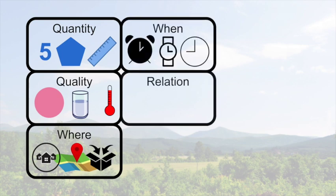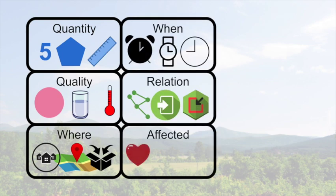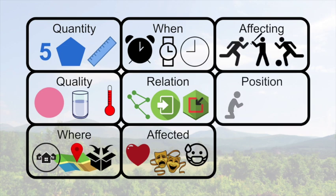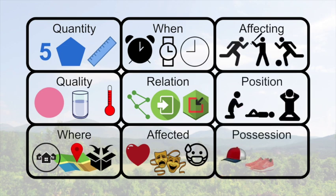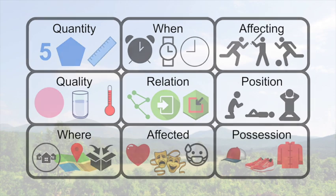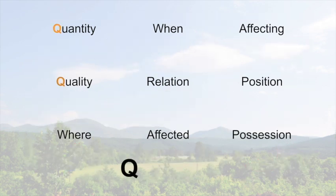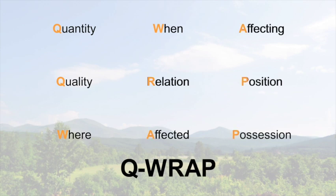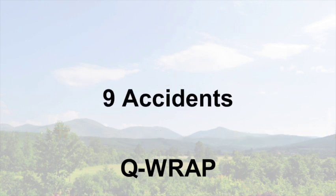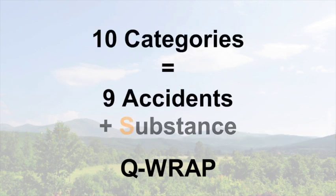We have when, which is time; or relation; or being affected; or affecting something else; or position; or possession. We can remember these by an acronym: QWRAP includes all nine accidents. The ten categories are the nine accidents and substance, so let's add an S to the beginning. SQWRAP is an easy way to remember the ten categories.